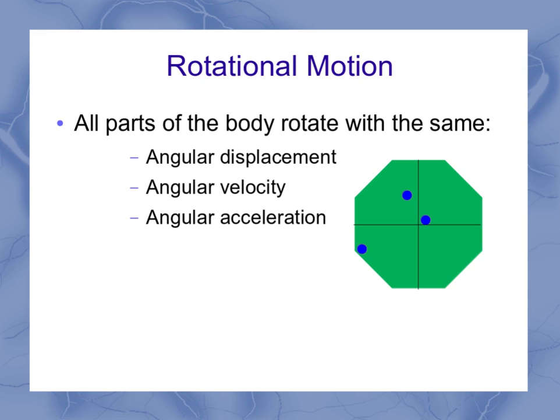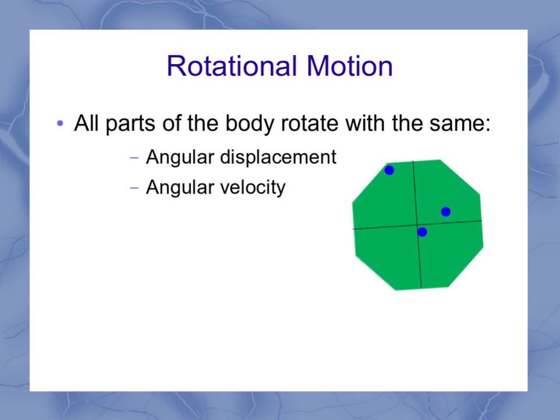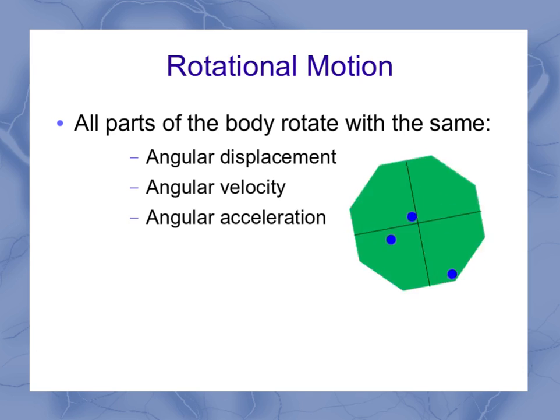If I were to back this up and play this again, what I see is that some of the points closer to the center move slower. Some of the points on the edge move faster. But they all go around once in the same amount of time. And so that's how I know it's got the same angular displacement.